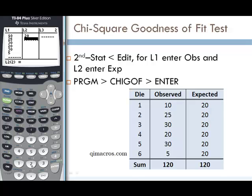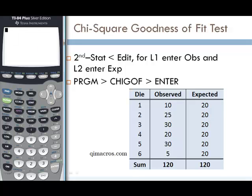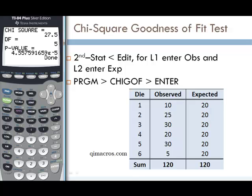Enter 20, ENTER, 20, ENTER for the expected values. Once finished entering data into the lists, press SECOND QUIT to go back to the main screen. From the main screen, press PRGM, select CHIGOF, press ENTER. This runs our program.